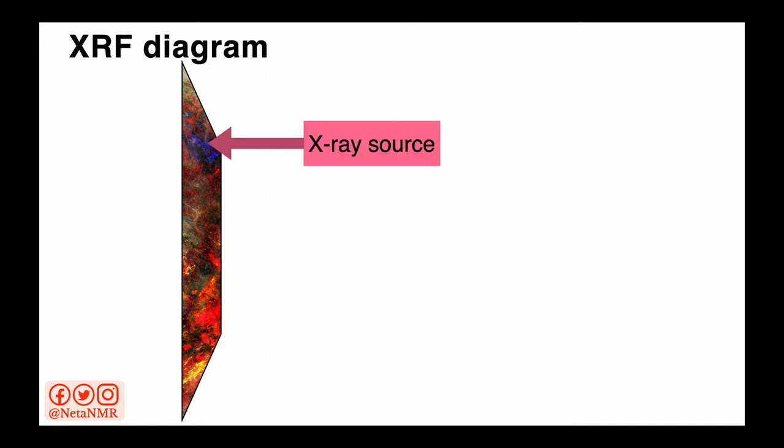So what we do is bring the XRF instrument close to the area of the painting we want to investigate, in this case the blue pigment, and we irradiate that area with X-rays. After we send the beam of X-rays to that area, we then record, with the help of a detector, the radiation emitted as a response to the irradiation with X-rays.